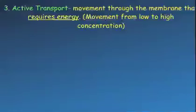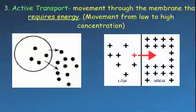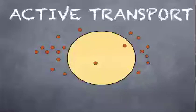Active transport is the opposite of diffusion — it's movement from low to high concentration, but it requires energy. This is where cells need to push something out. In this example, it's the little ones moving out, because that requires energy to happen.